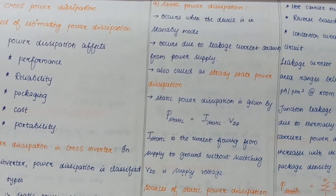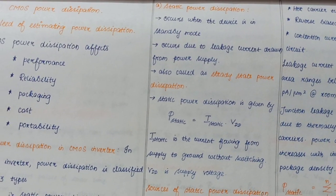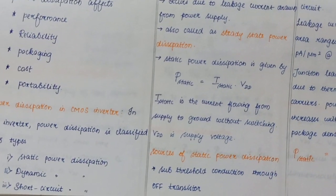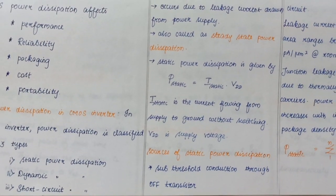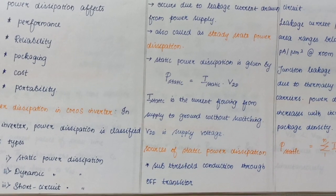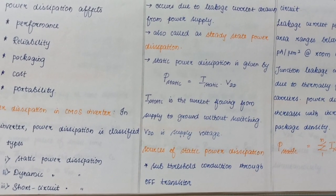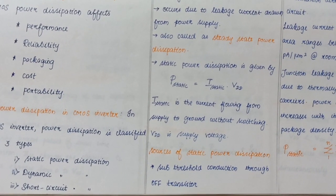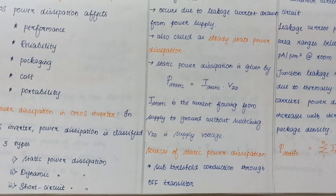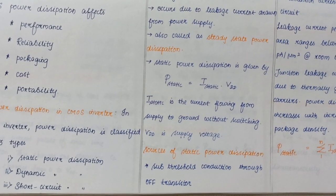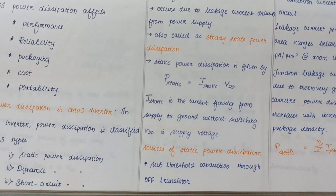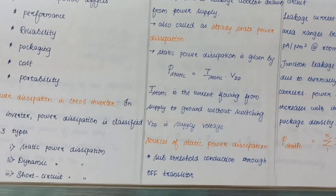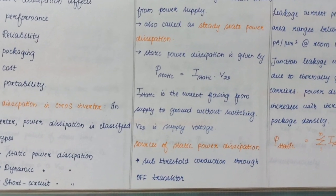The expression for static power dissipation is given by P static equals I static times VDD. From the normal power expression P equals VI, I static is the current flowing from supply to ground without switching, and VDD is the supply voltage.